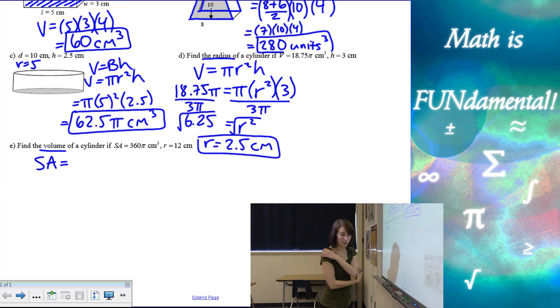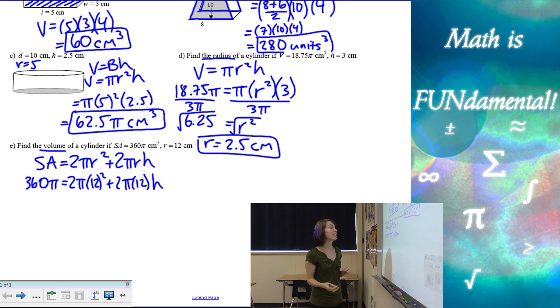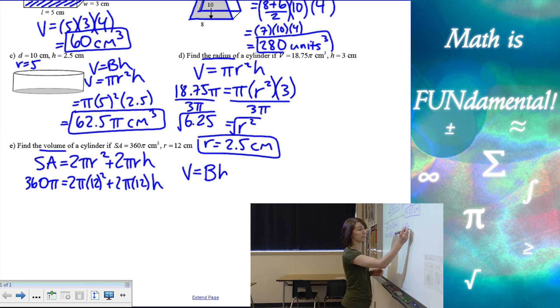Surface area of our cylinder is going to be, because there's two circles, two times the area of the base. So 2 pi r squared plus the perimeter of the base, which is circumference, 2 pi r times the height. Now, if you notice, I have the surface area of 360 pi and I know my radius, 2 pi times 12 squared plus 2 pi times 12 times h. So what this information is going to give us is we can find h, which is good because if I want the volume, I need area of the base times the height or pi r squared and h. I have r, but I don't have h yet.